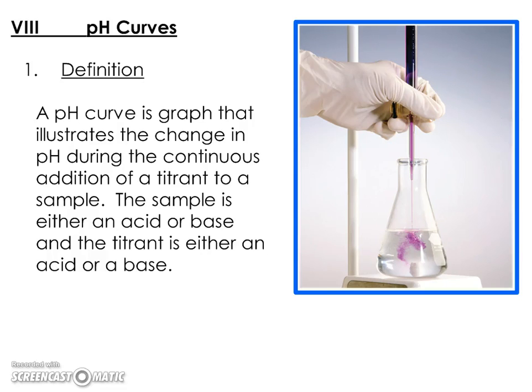A pH curve is a graph that illustrates the change in pH during the continuous addition of a titrant to a sample. This is a way of visualizing what happens during a titration, specifically what happens with an acid and a base reacting together, measuring the pH as we go.